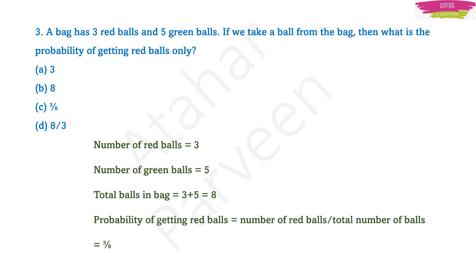In case you had a question asking for the probability of getting green balls only, you would write number of green balls upon total number of balls. Number of green balls is 5, so in that case it would be 5/8. Here for red balls it is 3/8. I am not going into details — this is just a quick revision glance.